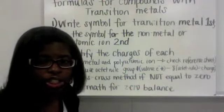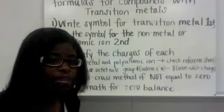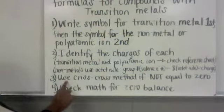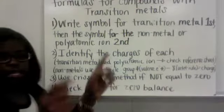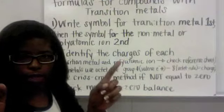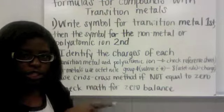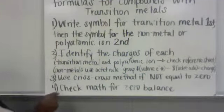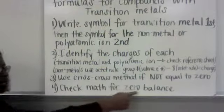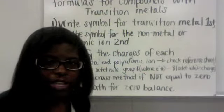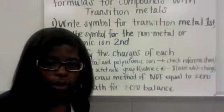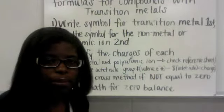Then you're going to check to make sure that your charges are balanced. If they're not, then you use step three, the criss-cross method, if not equal to zero. That's when you're going to take the numerical amounts for each charge and switch them. Step four, then you check the math for a zero balance. You want to make sure that the amount of atoms of each element balance out to zero with the amount of positive charges and the amount of negative charges.